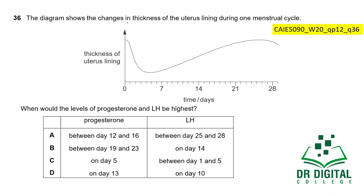In this question, the diagram shows changes in the thickness of the uterus lining during one menstrual cycle. The lining decreases during menstruation, then thickens as the follicle matures and the ovum develops. Around days 12–15 is the time of ovulation. After ovulation, the uterus remains thick until menstruation begins again after day 28. LH (luteinizing hormone) is highest at the time of ovulation, which typically occurs around day 14. So option B with LH high around day 14 could be correct.